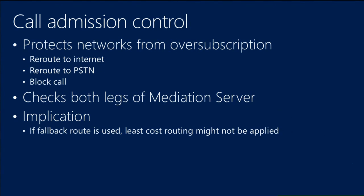Something sometimes overlooked: CAC is not just used for Lync internally — you can also use it for a SIP trunk with limited capacity. When you buy a SIP trunk the carrier may guarantee bandwidth for 50 calls but let you make the 51st call for an extra charge, impacting all calls. You can enable call admission control on the secondary leg of the mediation server — the mediation server to SIP trunk leg — to ensure no more than 50 calls at any given time.